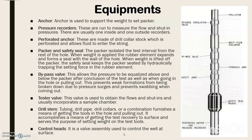There are various tools which form part of the DST. First is the anchor, which is used to support the weight to set the packer. Pressure recorders are used to measure the flow and shut-in pressures. Perforated anchors are made of drill collars. The perforated sub allows fluids to enter the string. The packer is used for zonal isolation. The bypass valve is used for pressure equalization above and below the packer after the test is terminated. The tester valve is used to obtain flow and shut-ins and usually incorporates a sample chamber. The drill stem provides a means of getting the test recovery to the surface and serves to set weight on the test tool. Control heads are a valve assembly used to control the well at surface.